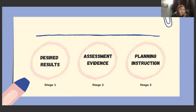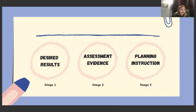Stage 1 is Desired Results. The instructor should examine the content standards to be taught and develop instructional objectives. Additionally, teachers should review the scope and sequence of what is to be taught. The guiding question for this stage is: what should learners be able to do, know, and understand at the end of the instruction?